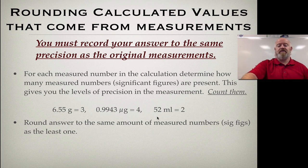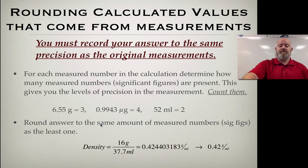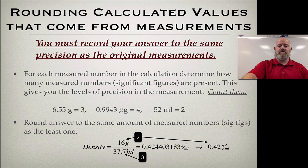Once you can count your significant figures, all you need to do is round your answer to the same number of measured values — sig figs — as the least precise measurement. We'll use density as our example calculation since it's straightforward. We take mass divided by volume, and the mass measurement has two layers of precision — two significant figures.